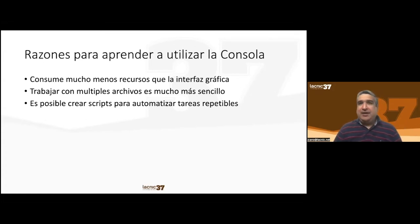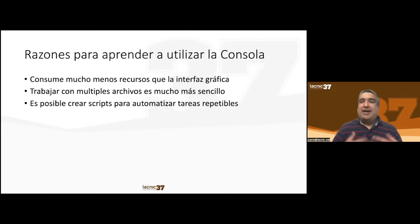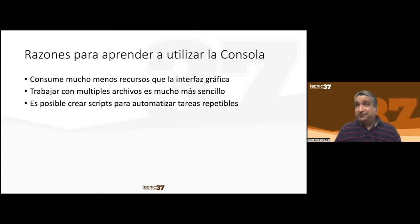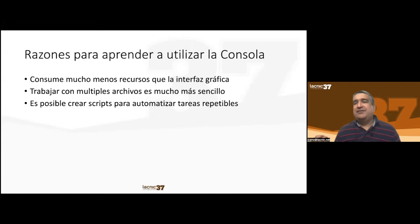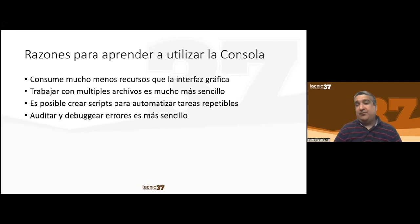A script running all commands serially lets you control several machines simultaneously and standardize them. The script won't make mistakes, won't forget to run a command, and won't introduce typos or other human errors. Tools like Puppet and Ansible go one step further, and knowing how to manage the console makes learning those tools much easier.